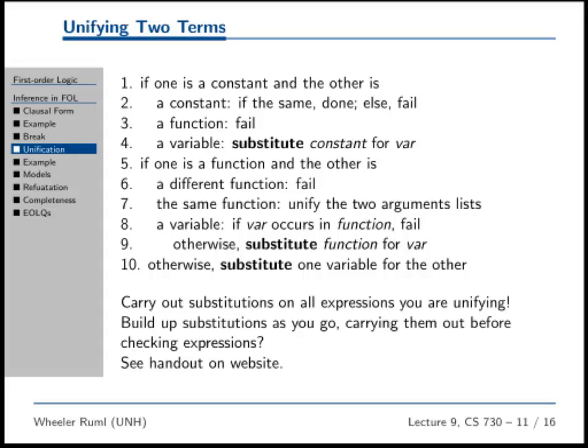Otherwise, we're going to have two variables because we've done the case in which one is a constant or one's a function. So otherwise they're both variables, and then you just substitute one for the other. That's unification in brief. We'll talk about case eight on Monday.